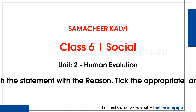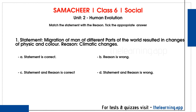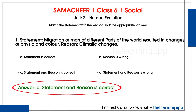Next, match the statement with the reason. First question — Statement: Migration of man to different parts of the world resulted in changes of physical appearance and skin color. Reason: Climatic changes. Due to climatic changes, people had to migrate and adapt their bodies physically. Therefore, statement and reason both are correct.